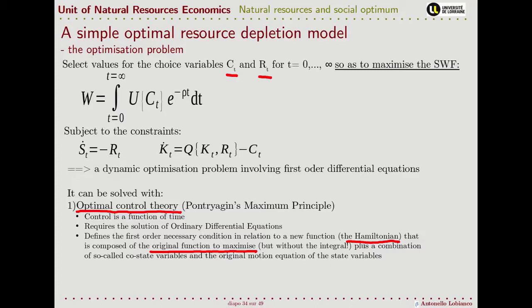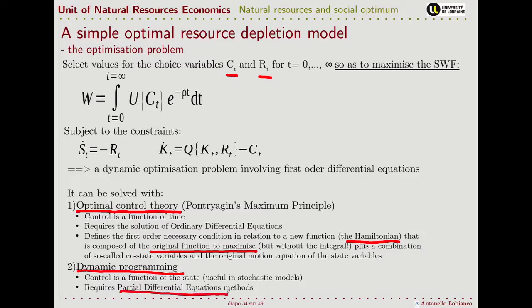There is another way to solve this class of problems, that is using dynamic programming, where the difference is that the control, instead of being a function of time itself, is a function of the state. At each moment in time, the solution is given in terms of what you do, given the current state of your model. If you have deterministic models, the two systems are equivalent, because at each moment of time you are given the state. But when you have stochastic models, you are obliged to use the second model. The downside, of course, is that using partial differential equations is a bit harder to implement.